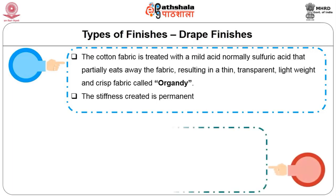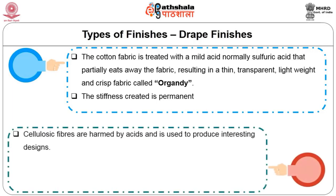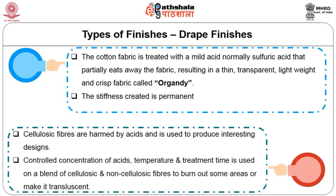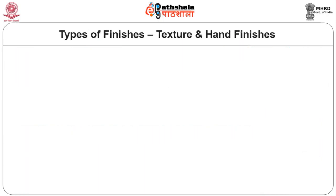Burnt out finish: cellulosic fibers are harmed by acids. Controlled concentrations of acid, temperature and treatment time are used on a blend of cellulosic and non-cellulosic fibers to burn out some areas or make it translucent. Texture and hand finishes are plissé, shearing, napping, beetling, suiting, jigging and tigering.